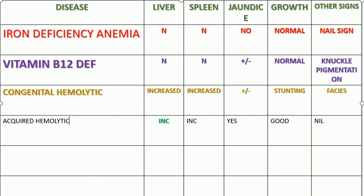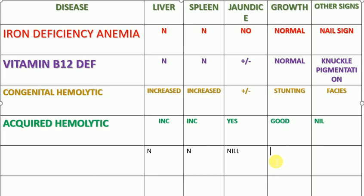In acquired hemolytic anemia the liver is a little bit increased, the spleen is increased, there is jaundice, but everything else is normal. Compare this with congenital hemolytic anemia where there is enormous enlargement of liver and spleen, jaundice may or may not be present, growth is affected, and facial abnormalities are found. Now if almost everything is normal — no palpable spleen, no palpable liver, no jaundice, normal growth — but there are some anomalies, the diagnosis is aplastic anemia.